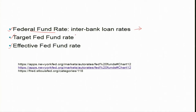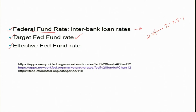The second term is the target Fed fund rate. For example, if the target is 2% to 2.25%, the Federal Reserve System expects and wants the Fed fund rate to fall somewhere between those two values. That range is the target.